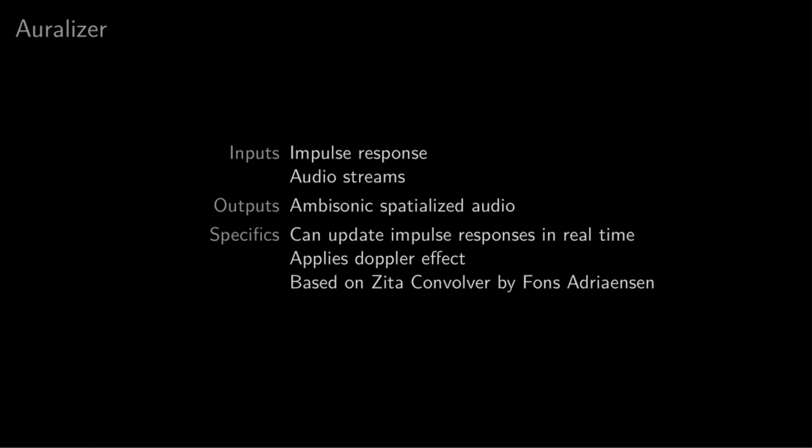The third and last component in Varese is the auralizer. The auralizer applies the ambisonic impulse response generated by the encoder, and allows it to be updated in real time. So it takes as an input an impulse response, as well as an audio stream that corresponds to the sound played by a source in the scene. And then it outputs ambisonic spatialized audio, which is the convolved sound. It supports multiple sources, each with their own impulse response, and those impulse responses can all be independently updated in real time. We also simulate the Doppler effect when the delay before the direct sound varies when updating the impulse response. It means that when a sound is approaching us quickly, we will perceive its pitch as being higher and vice versa.